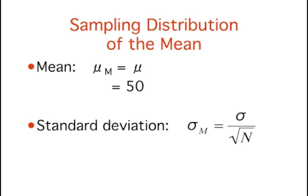The first step is to determine the sampling distribution of the mean. As shown in an earlier section, the mean of the sampling distribution of the mean is equal to the population mean, which in this example is 50. The standard deviation of the sampling distribution of the mean, also known as the standard error of the mean, is equal to the population standard deviation divided by the square root of n. In practice, we rarely know the population standard deviation, and therefore use the sample standard deviation as an estimate.